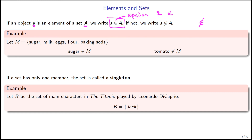Here's an example. Let's say we have a set of ingredients, call this capital M. In this set we have sugar, milk, eggs, flour, and baking soda. Sugar is in the set, so we can write: sugar is an element of M. But tomato is not in this set, so we would say tomato is not an element of M — using the element symbol with a line through it, read as 'is not an element.'